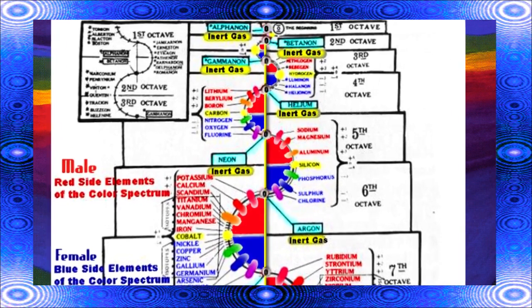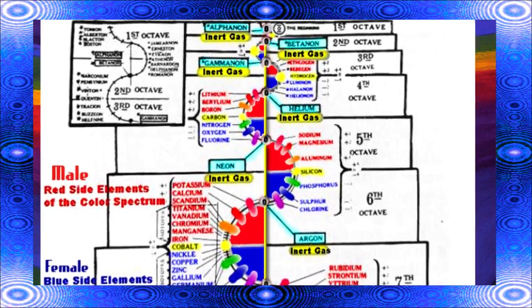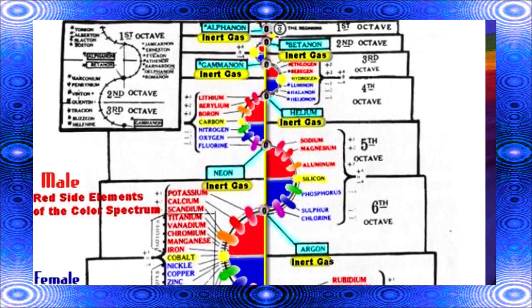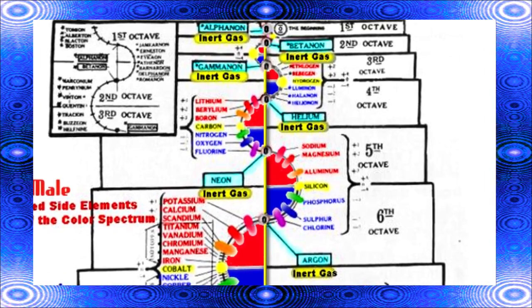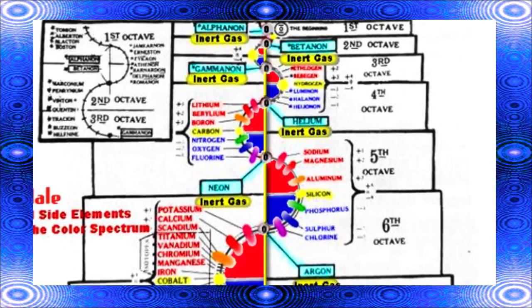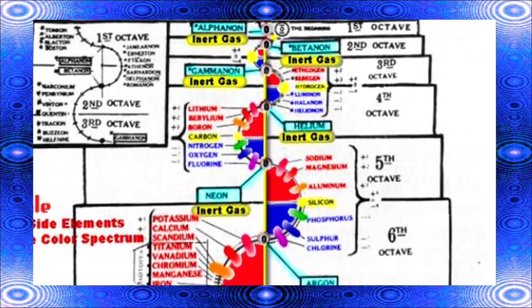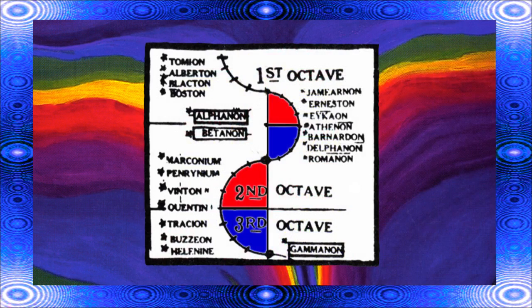What science doesn't understand is that hydrogen is at the amplitude wave of the third octave. That means there are these two and a half to three and a half octaves right here that are full of space gases, which Walter Russell has labeled right here — they're hard to read, I know. But the point is they are nebulous gases.